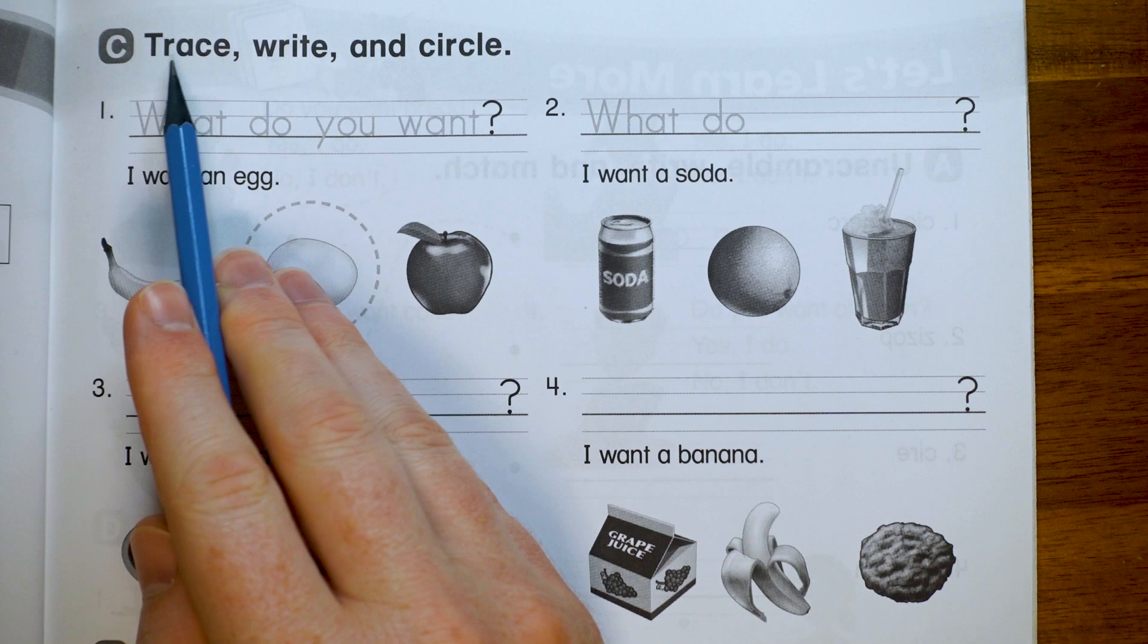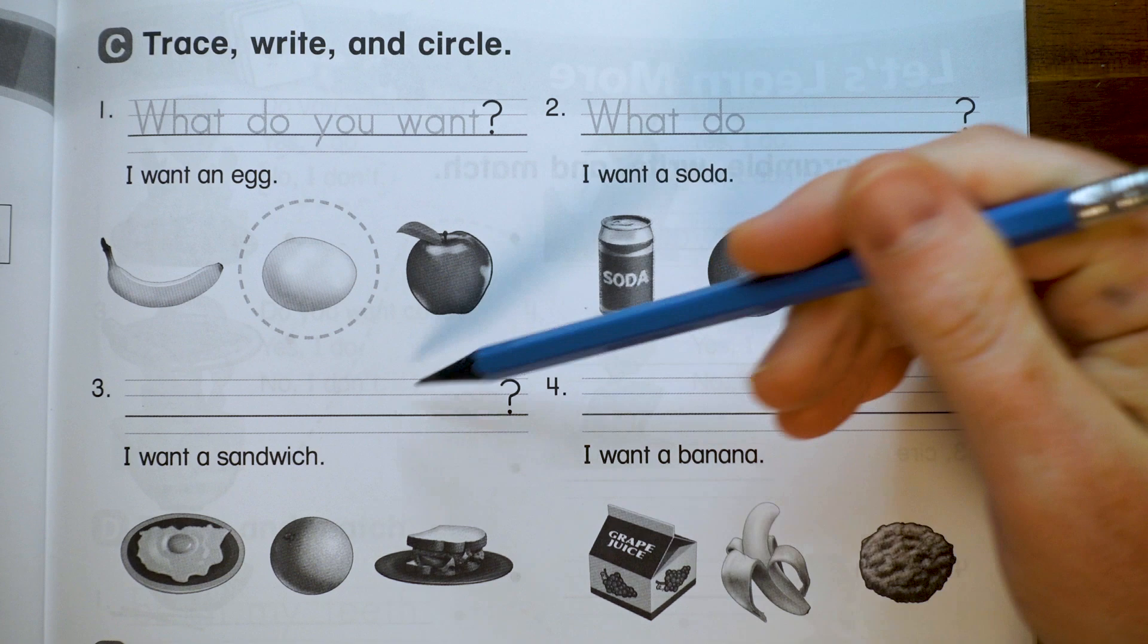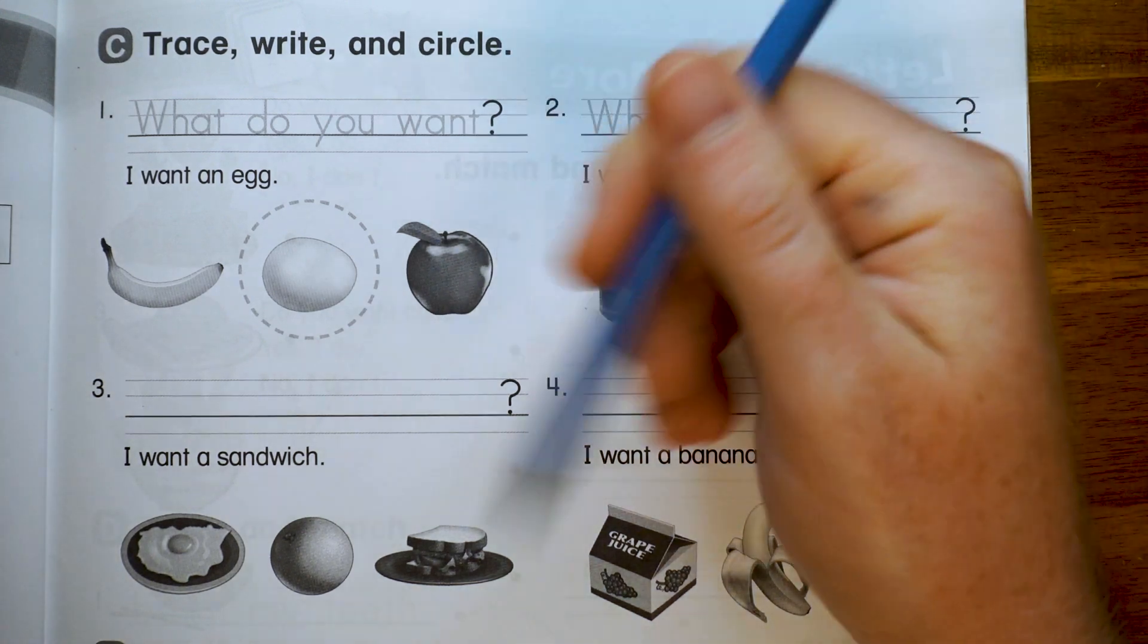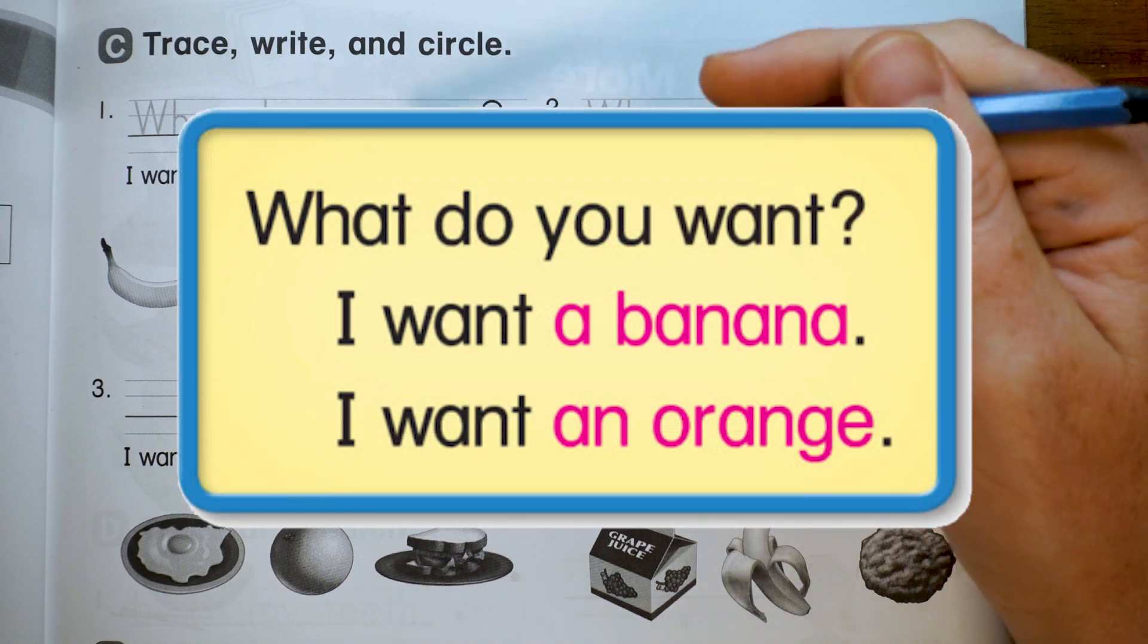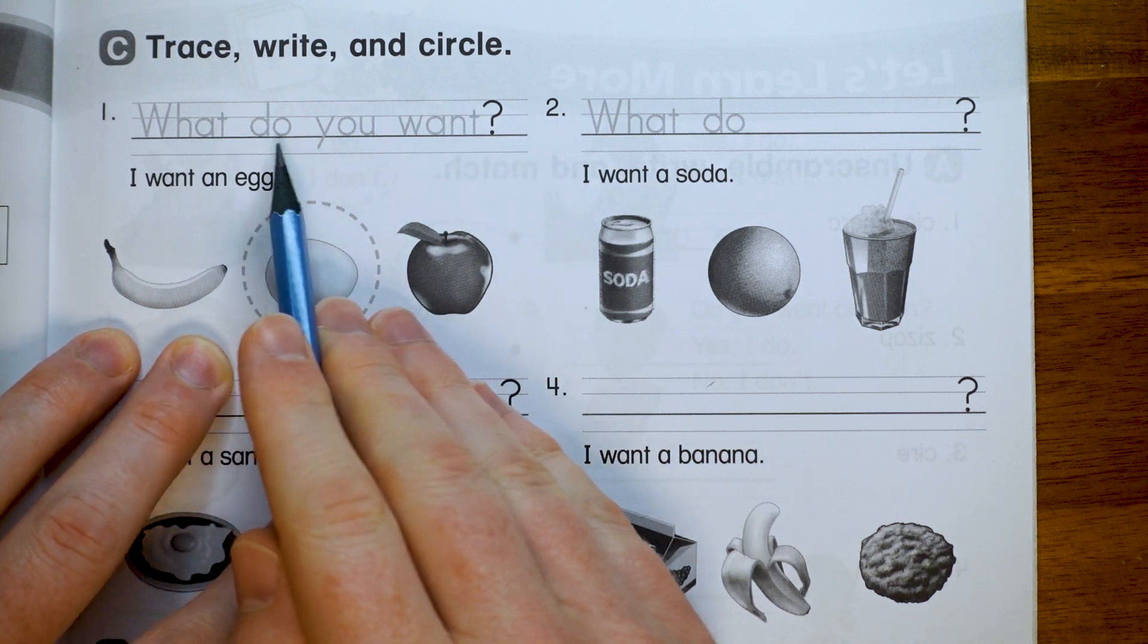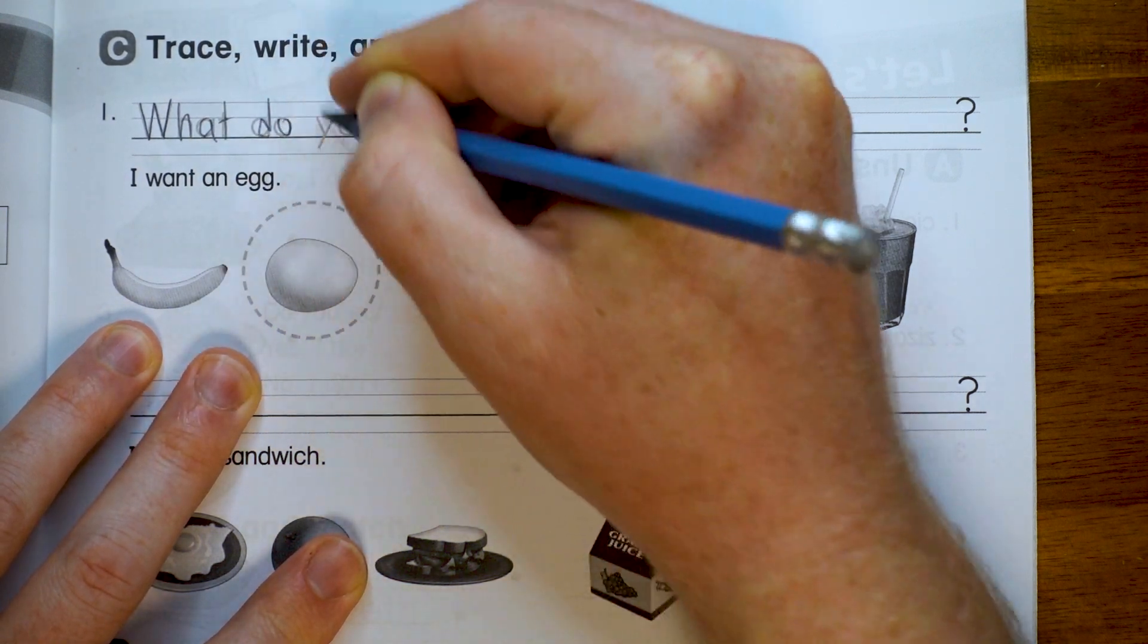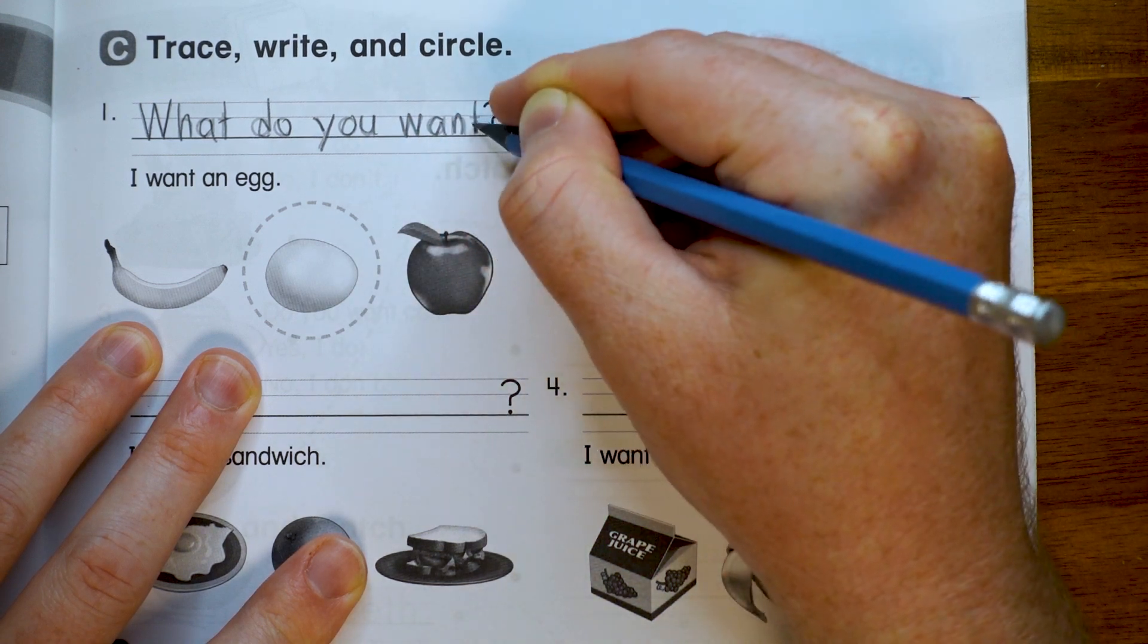Okay, Part C says trace, write, and circle. And so we're going to be writing the question four times, and then we have to read their answer and circle the right picture. In your student books, the question and answer look like this. Let's start. Number one. What do you want?